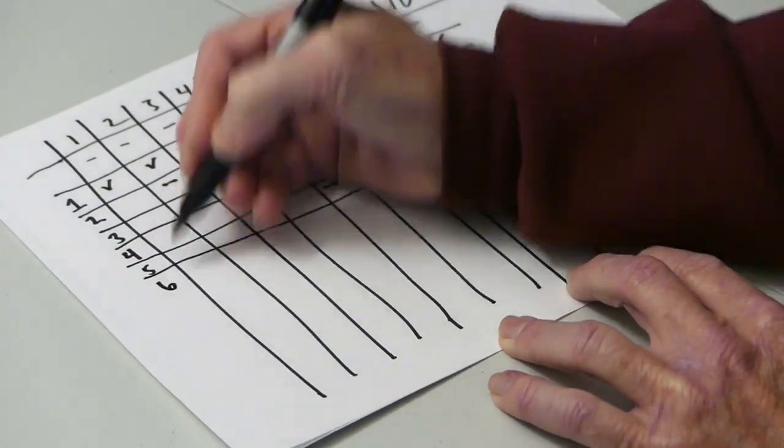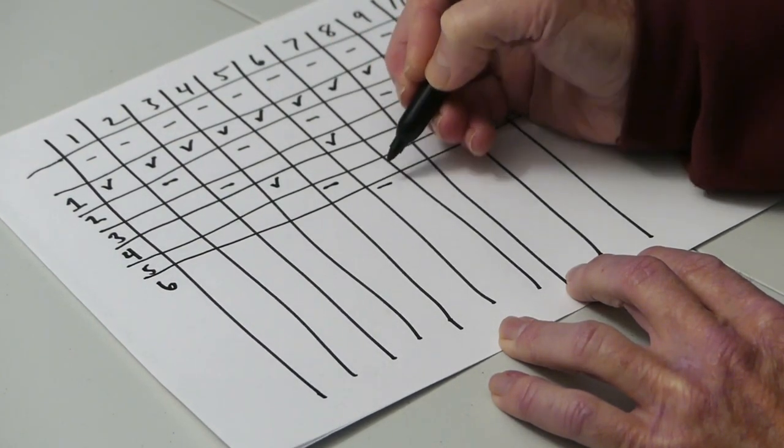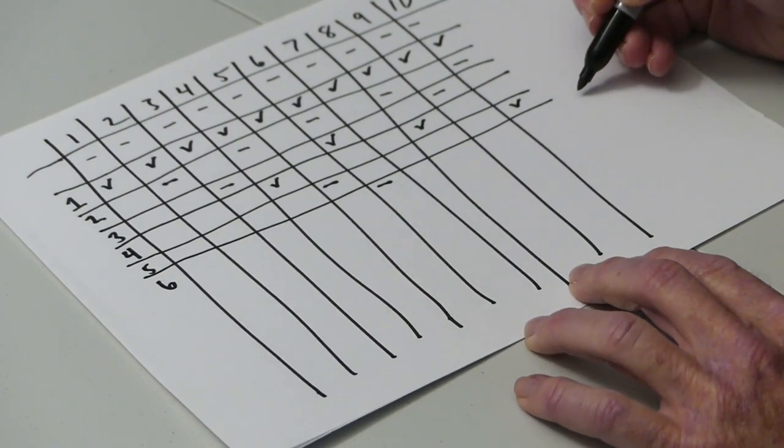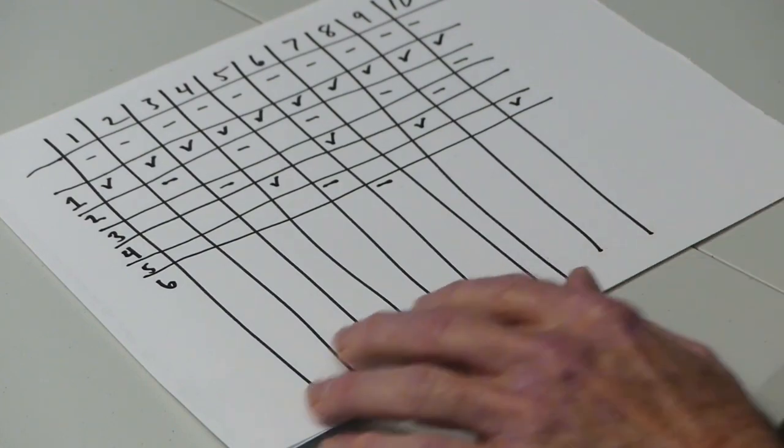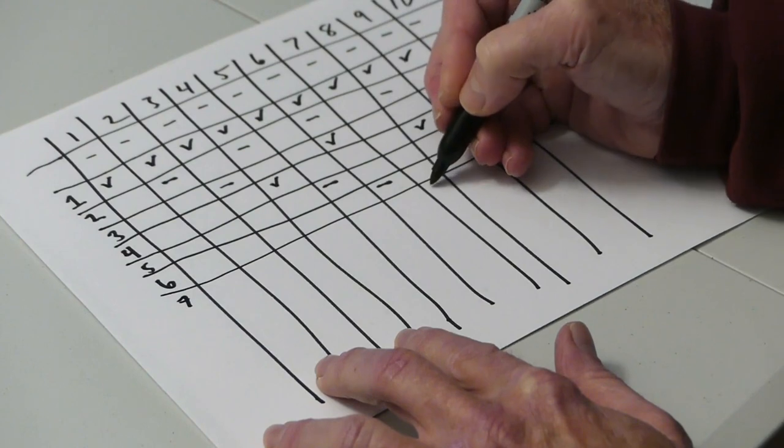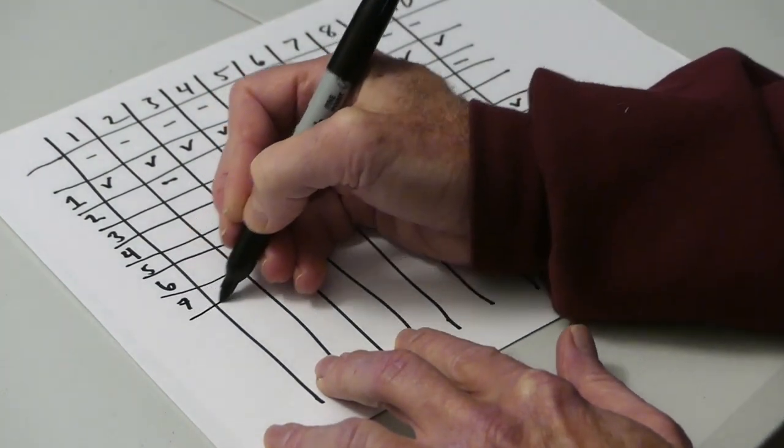Student 6 starts at locker 6 and closes it. Every sixth locker would be locker 12, which is beyond our limit of 10, and student 6 is finished. If we had 100 lockers, they would go on to lockers 12, 18, 24, and so on. Same with student number 7. Starts at locker 7 and closes it, and they're finished.